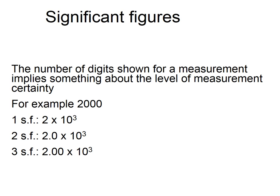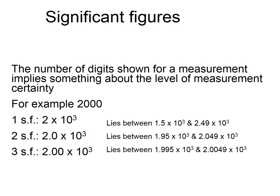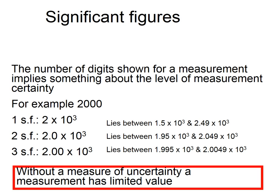Whereas the one at the bottom is obviously much closer to 2. And also, without this kind of concept of how precisely we know a number, the number itself is essentially useless.